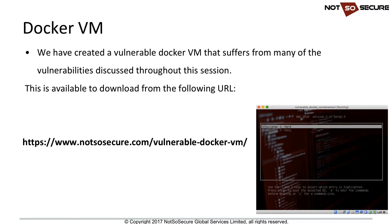To give everyone a hands-on chance with Docker vulnerabilities, we created a vulnerable Docker VM. Available at the provided URL in OVA format, you import it into VirtualBox. On boot you get two options: Challenge Hard and Challenge Easy. Depending on your skill level, you need knowledge of Docker and pen testing combined to eventually gain access to the host machine. Download links and details are at the URL shown.